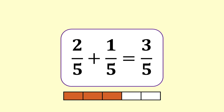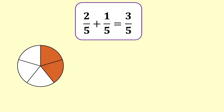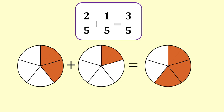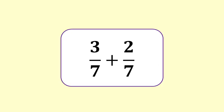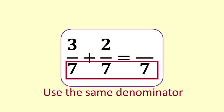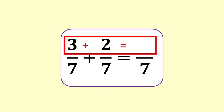People like circle models of fractions too: 2 fifths plus 1 fifth equals 3 fifths. An example with sevenths: 3 sevenths plus 2 sevenths. The denominator for the answer is the same as the denominators of the fractions being added. Our answer will be sevenths. We add the numerators: 3 plus 2 equals 5. So 3 sevenths plus 2 sevenths equals 5 sevenths.